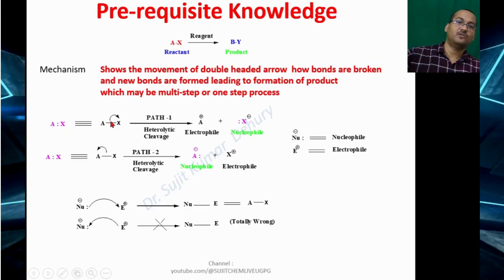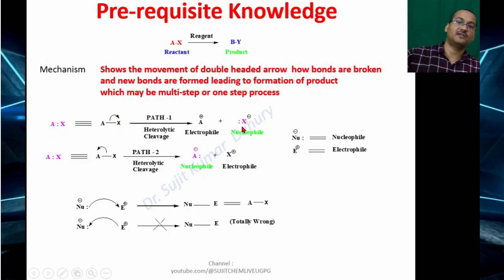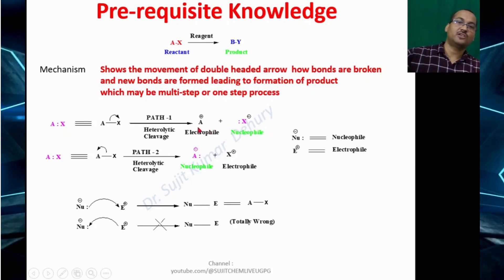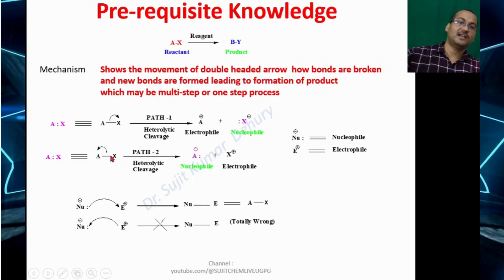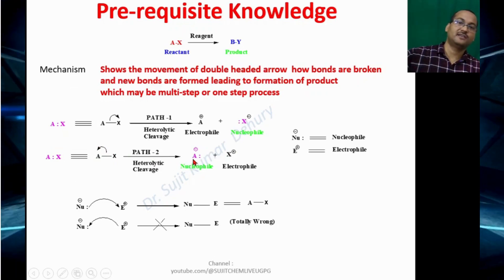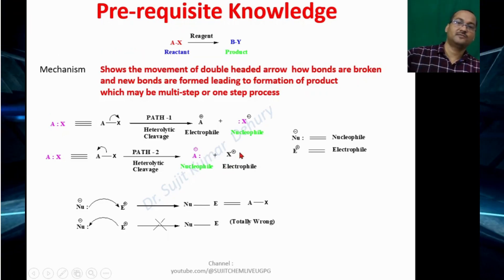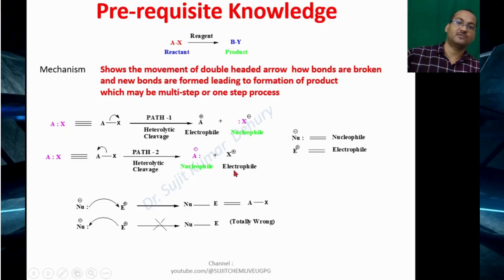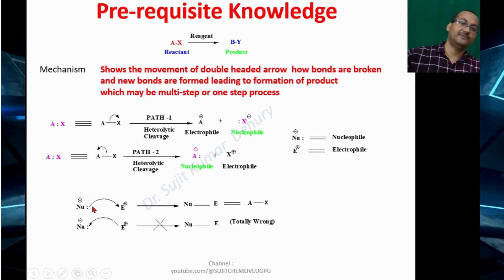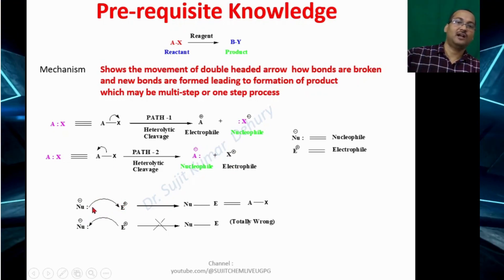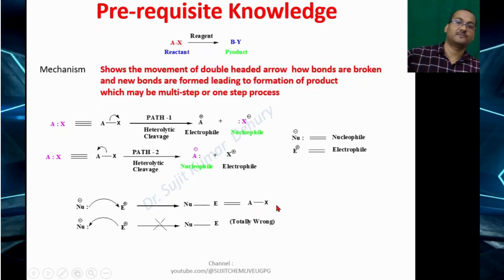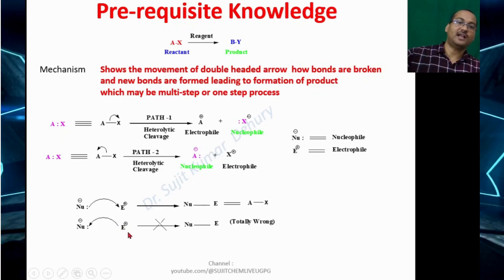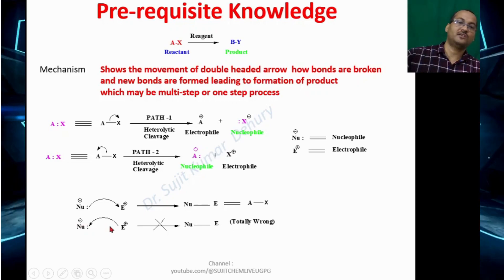When the bond Ax is broken heterolytically, the atom that retains both electrons gets a negative charge and is regarded as a nucleophile; the other atom loses both electrons, gets a positive charge, and is known as an electrophile. In writing a mechanism, the nucleophile always attacks the electrophile, represented by a double-headed arrow, giving rise to a nucleophile-electrophile bond. You cannot have the electrophile attack the nucleophile — that is not possible.